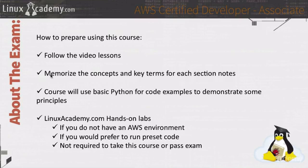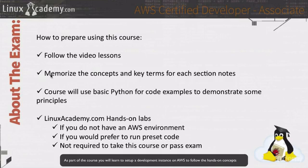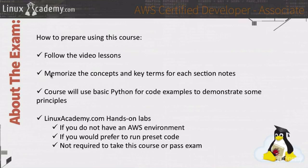It's not required for you to take this course, but you will need to take the Python code and put it on a Linux instance or a place to execute that code against Amazon Web Services using your API keys or an IAM role. If you'd like to use pre-built labs where all of that is done for you — where all you have to do is start the lab and run the code — you have the option of using linuxacademy.com hands-on labs. That is a membership you can sign up for at linuxacademy.com, though it's not required to pass the exam.